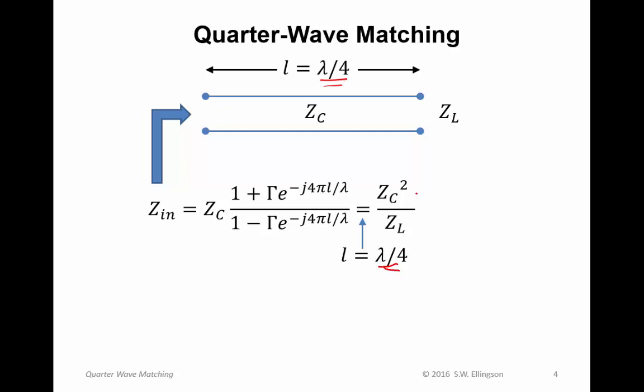we find that the input impedance is given by Z sub C squared divided by Z sub L. So this relatively complicated looking expression becomes a very simple expression, which depends only on Z sub L and Z sub C.